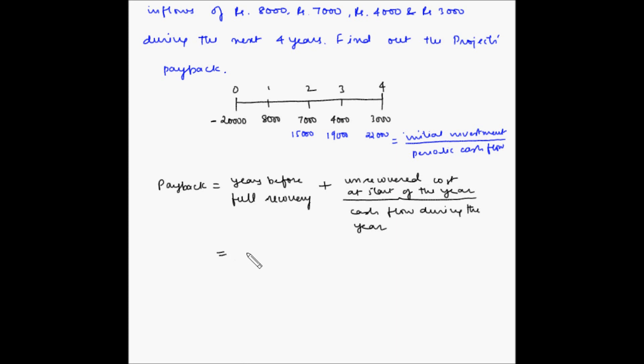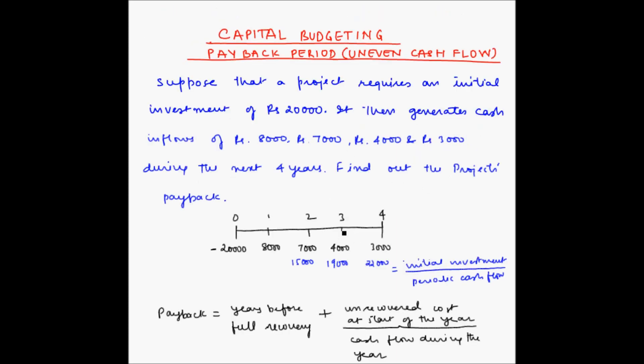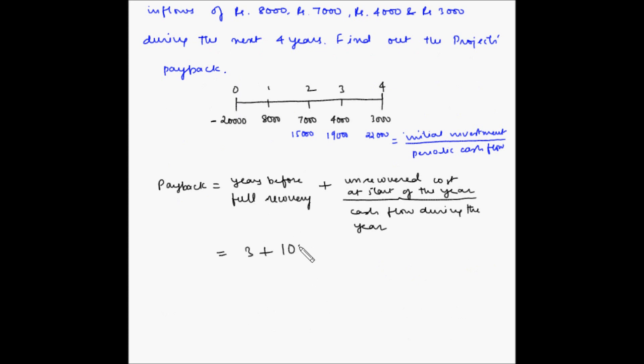This is equal to 3 plus unrecovered cost at the start of the year. At the end of third year, we have recovered 19,000 rupees. The unrecovered cost at the start of the fourth year is 20,000 minus 19,000, which is 1,000. So unrecovered cost is 1,000 rupees and the cash flow during the year is 3,000 rupees, so divided by 3,000.